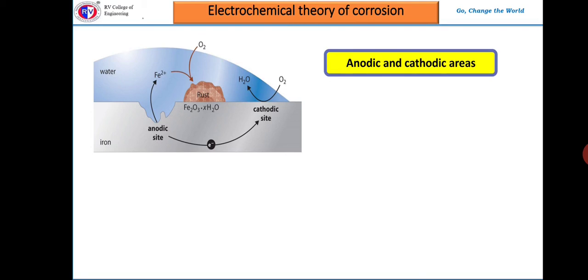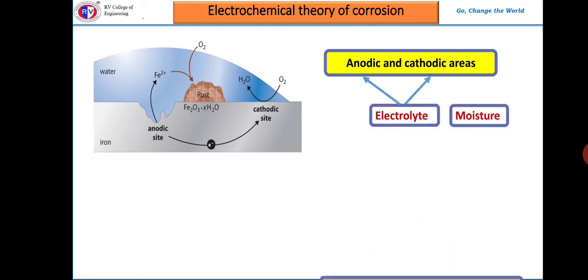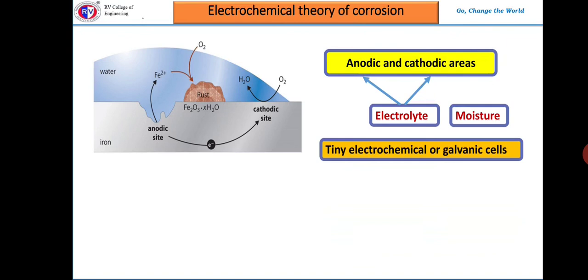Hence, there will be formation of anodic and cathodic areas that are not widely separated. A presence of an electrolyte in the medium like moisture in contact with these areas results in tiny large number of chemical cells. That is called as tiny electrochemical cells or galvanic cells. Whenever there is a chance for such tiny cells to form, chemical reactions lead to corrosion. The metal acts as an electron conductor and the solution, that is water on it, completes the circuit by conducting ions.